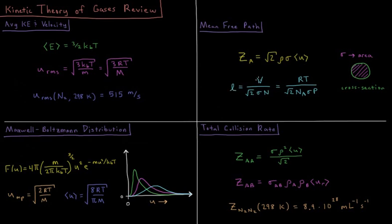The mean free path can then be expressed in terms of either volume per particle or temperature and pressure. The mean free path is V over the square root of 2 sigma N, which is also equal to RT over the square root of 2 NA times sigma times P, NA being Avogadro's number.